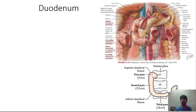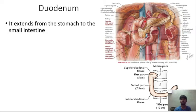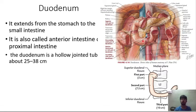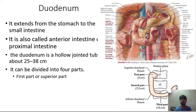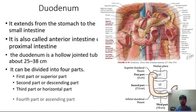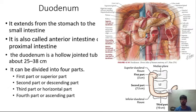The duodenum extends from the stomach to the small intestine and is also called the proximal intestine. It is about 25 to 38 centimeters long and is a hollow jointed tube. It can be divided into four parts: the first (superior) part, the second (descending) part, the third (horizontal) part, and the fourth (ascending) part.